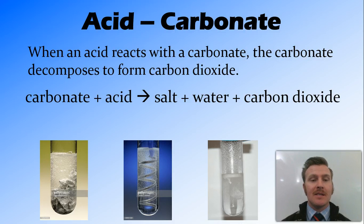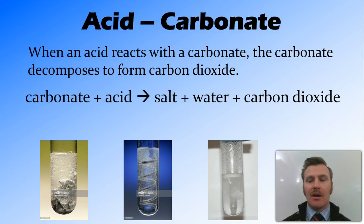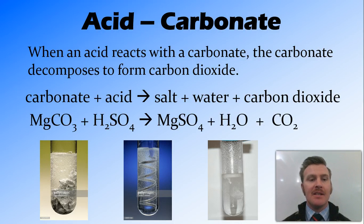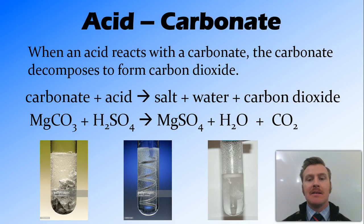So in the presence of acid, the carbonate reacts to form that metal salt, water, and carbon dioxide. An example of this would be magnesium carbonate reacting with sulfuric acid. The salt produced is going to be magnesium sulfate. It's also going to produce water and carbon dioxide.